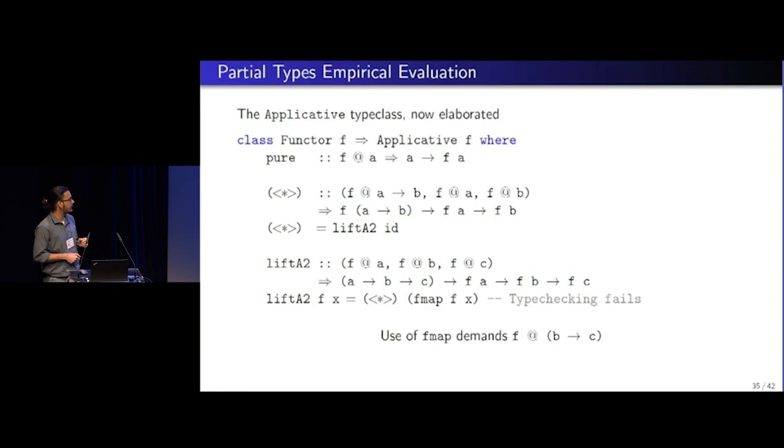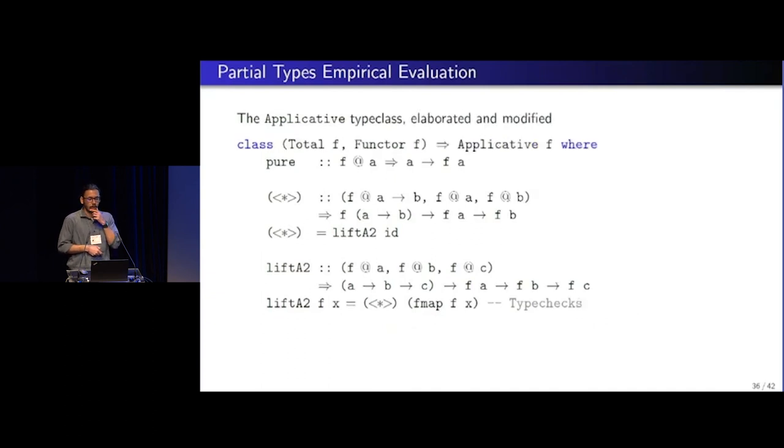And in the elaborated world, we now have these extra constraints floating around. And we see that lift a2 no longer type checks. And the reason why is that fmap requires an extra f at b to c constraint due to this guy here. So fmap demands that. Well, actually, even splat demands that, which cannot be satisfied. So lift a2's type signature is not strong enough to account for the constraints that we need to hold.